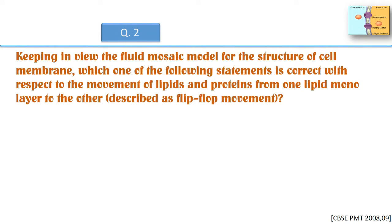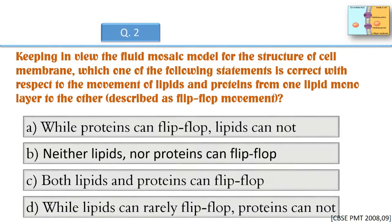Keeping in view the fluid mosaic model for the structure of cell membrane, which one of the following statements is correct with respect to the movement of lipids and proteins from one lipid monolayer to the other, described as flip-flop movement?